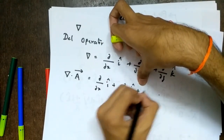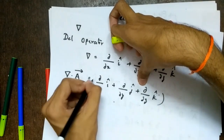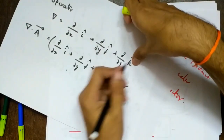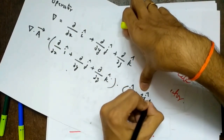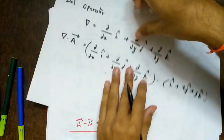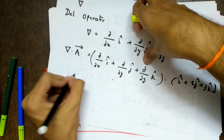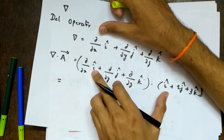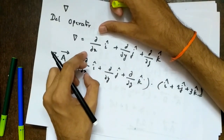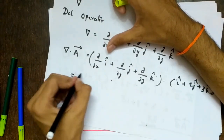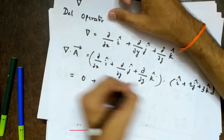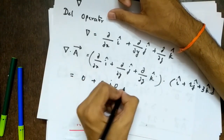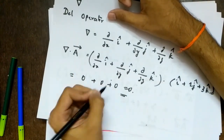Let's take del dot with vector A — which is i-cap plus two j-cap plus three k-cap. This is a dot product, so we multiply corresponding terms: partial by partial x of one is zero, plus partial by partial y of two is zero, plus partial by partial z of three is zero. We are getting zero because all three components are constants.